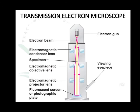The construction of the transmission electron microscope: there is an electron gun, usually a tungsten filament, which is the source for electrons. An electron beam is produced and focused by an electromagnetic condenser lens onto the specimen. Then an electromagnetic objective lens and an electromagnetic projector lens are used to further focus the beam, and finally an image is obtained on a fluorescent screen or photographic plate.